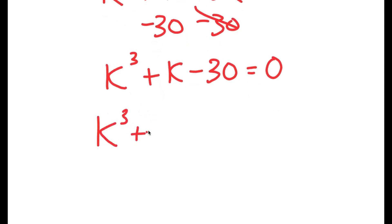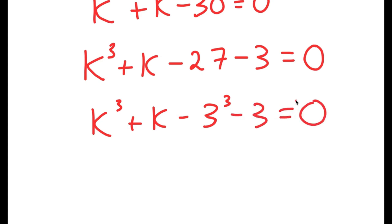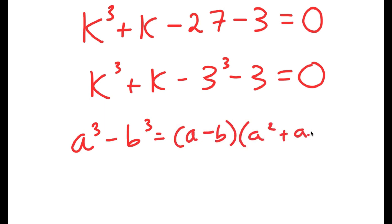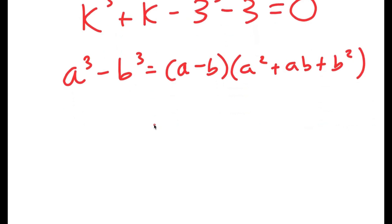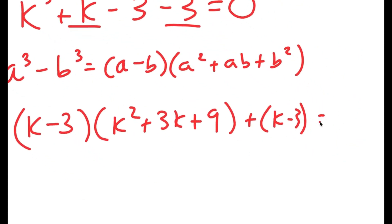Now I'm going to write this as k to the power of 3 plus k minus 27 minus 3 is equal to 0. And 27 is the same thing as 3 to the power of 3. So I get k to the power of 3 plus k minus 3 to the power of 3 minus 3 is equal to 0. Now if I have something in the form a to the power of 3 minus b to the power of 3, this is equal to a minus b times a squared plus ab plus b squared. So this is equal to k minus 3 times k squared plus 3k plus 9, and we can't forget our plus k minus 3 at the end, and this is equal to 0.